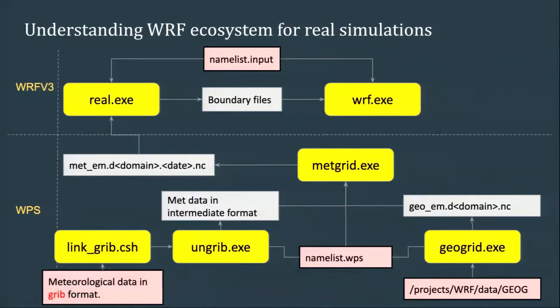A question from someone new: do these steps come in order? Yes, depending on what you want to use for meteorological data, you can either have some help or not at all. If your input meteorological data is not in GRIB format, it is possible to get the data into the intermediate format, but there's more work involved and nothing already exists to help you do it. If you ever need to do that, you can ask CMS for help.